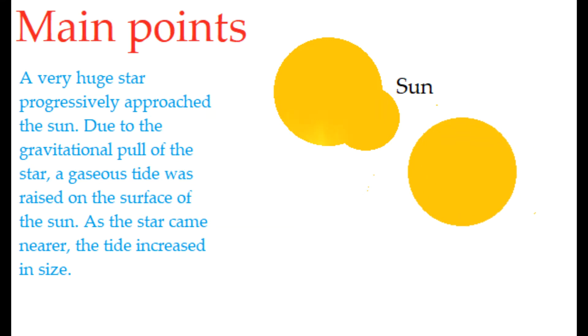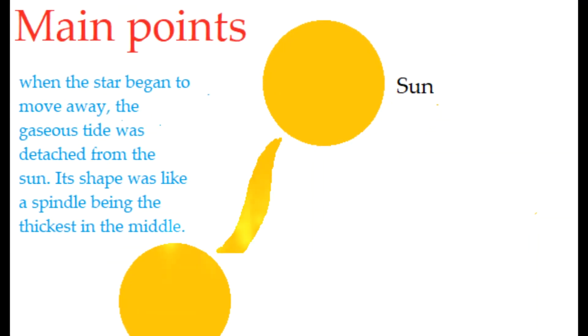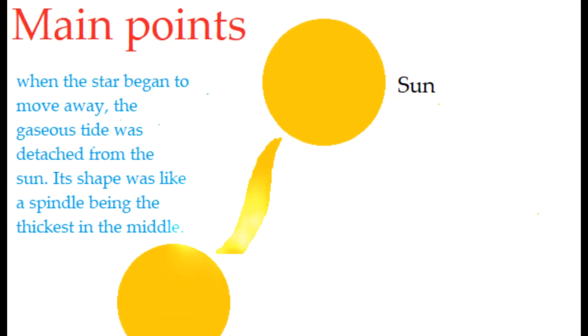As the star came nearer, the tide increased in size. When the star began to move away, the gaseous tide was detached from the Sun.